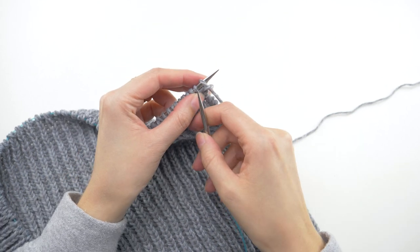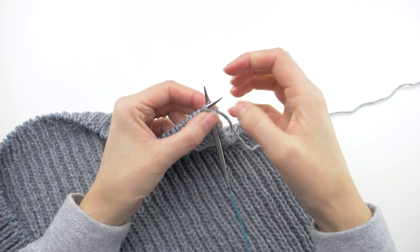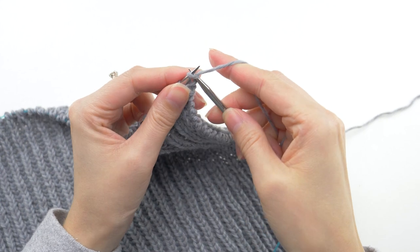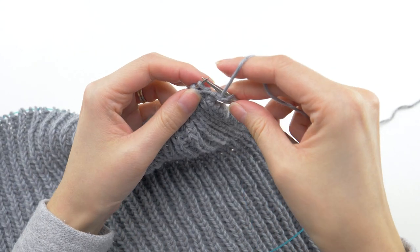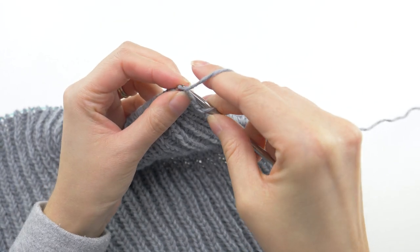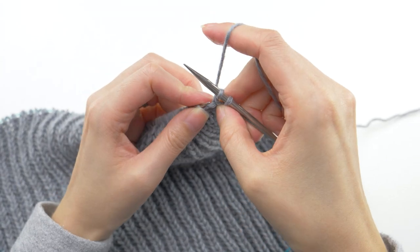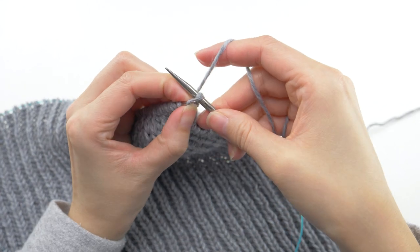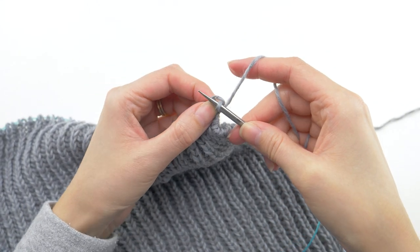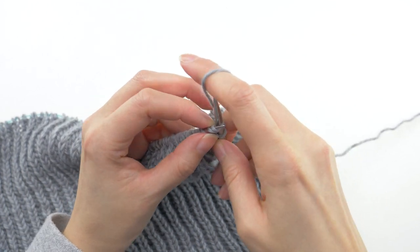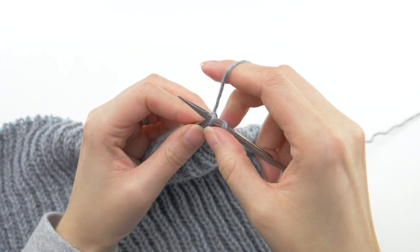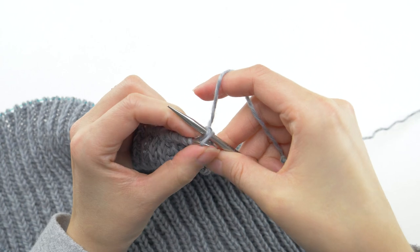Okay, so for the bind off, knit the first stitch as usual, and when you would normally slip one purlwise, instead you're going to purl this stitch. Then pass the first loop over the last, and knit your BRK, and pass the first loop over the last.